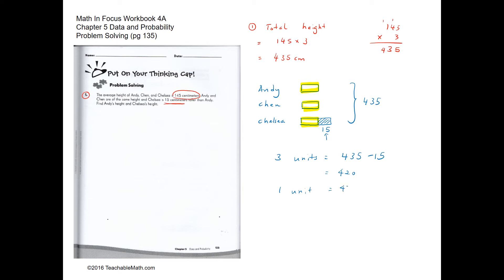Three units equals 435 minus 15, which is 420. So one unit equals 420 divided by 3. Breaking 420 into 300 and 120: 300 divided by 3 is 100, and 120 divided by 3 is 40. So one unit equals 140. Andy's height is 140 centimeters.